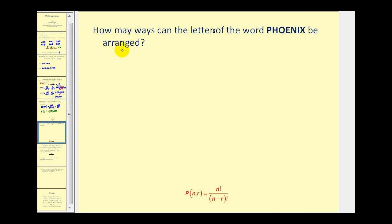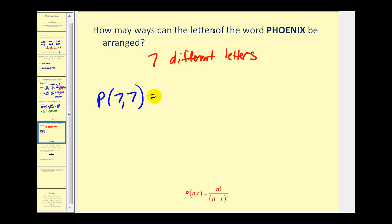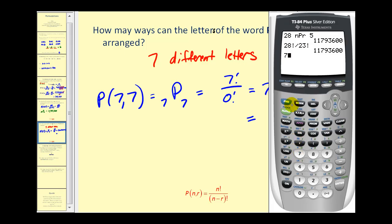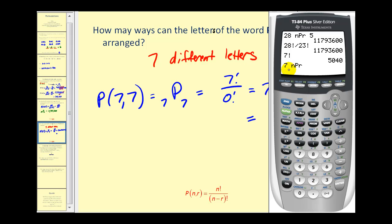How many ways can the letters of the word Phoenix be arranged? The first thing to notice is that every letter in this word is different — seven distinct letters. Each time we arrange them we want to use all the letters, so this is a permutation of seven items taken seven at a time. It equals seven factorial over seven minus seven factorial — that's zero factorial, which by definition equals one. So this is seven times six times five times four times three times two times one, which equals five thousand forty.